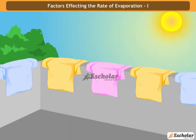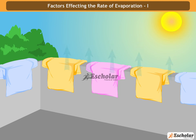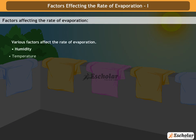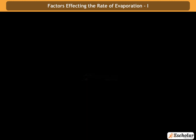For example, wet clothes can be dried on a sunny day, and that takes place due to the evaporation of water. Various factors affect the rate of evaporation. They are humidity, temperature, wind speed, and surface area.